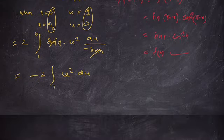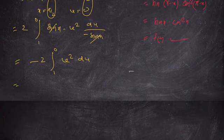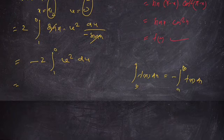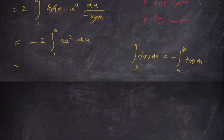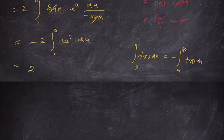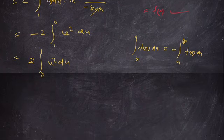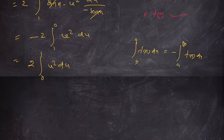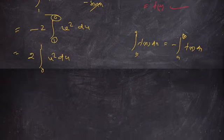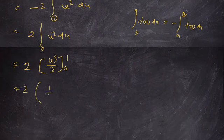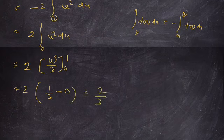Using the property that reversing the limits changes the sign, we get 2 into integration of u square du from 0 to 1. Integrating: 2 into u cube by 3 evaluated from 0 to 1 equals 2 into 1 by 3 minus 0. So the answer is 2 by 3.